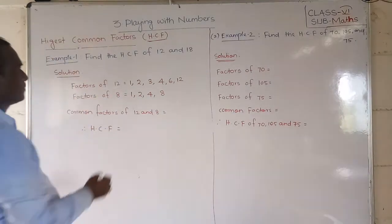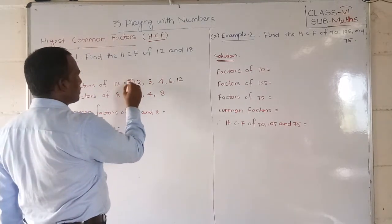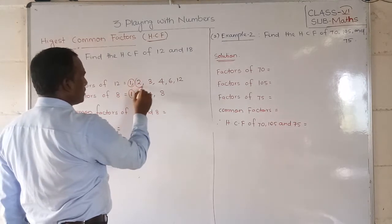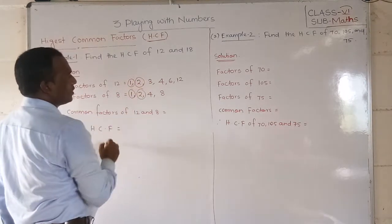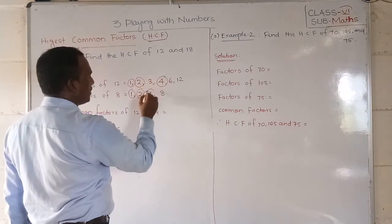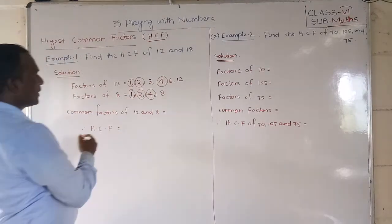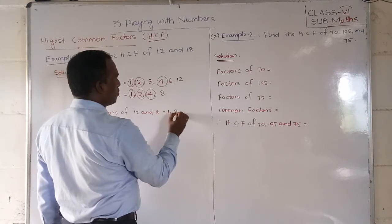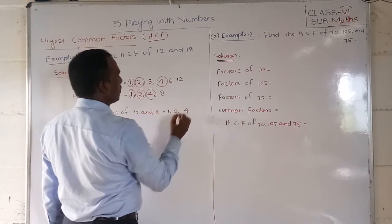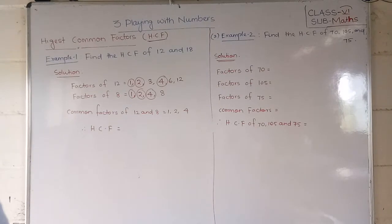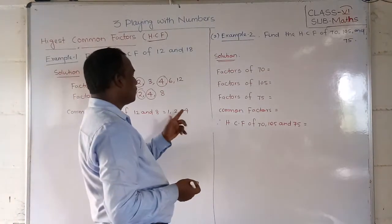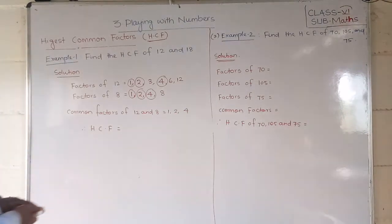Now mark the common factors. What is that? 1 is common. Here 2 is there, here 2 is there. Next here 4 is there, here 4 is there. So what are the common factors? 1, 2, and 4. Here 1, 2, 4 are the common factors.